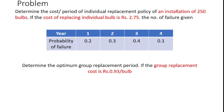To understand how to solve Replacement Model 3, consider this example problem: determine the cost per period of an individual replacement policy for an installation of 250 bulbs. The cost of replacing an individual bulb is Rs. 2.75. The probability of failure data is: 1st year = 0.2, 2nd year = 0.3, 3rd year = 0.4, and 4th year = 0.1.